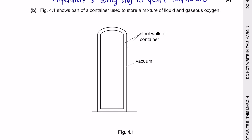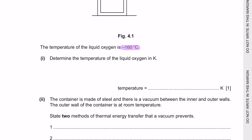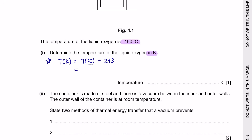Question B. Figure 4.1 shows a container storing a mixture of liquid and gaseous oxygen. The walls are made of steel with a vacuum between them — vacuum means no particles are present. Part 1: The temperature of the liquid is −160°C. Convert to Kelvin by adding 273: −160 + 273 = 113 K.